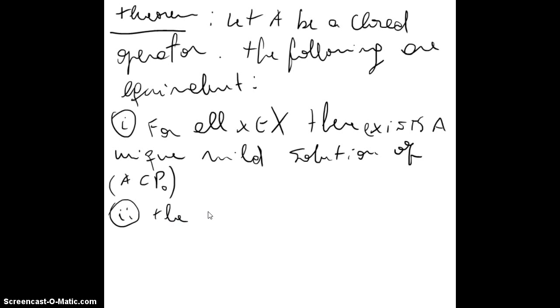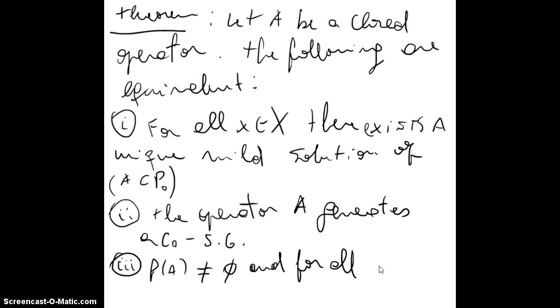Second, the operator A generates a C0 semigroup. And third, the resolvent ρ(A) is not the empty set, and for all x in D(A), there exists a unique classical solution of, once again, the abstract Cauchy problem homogeneous.